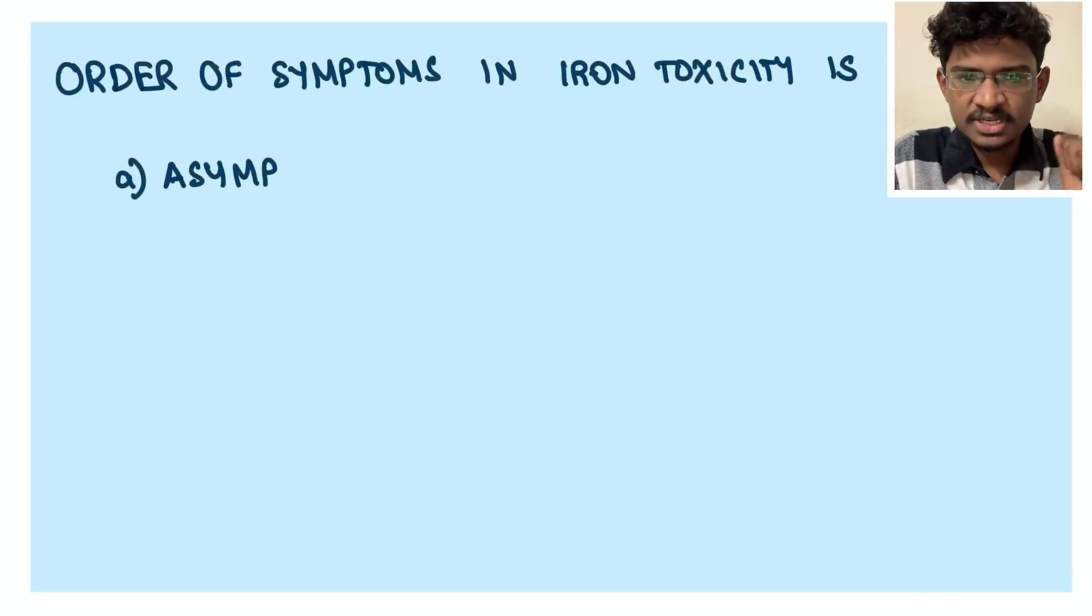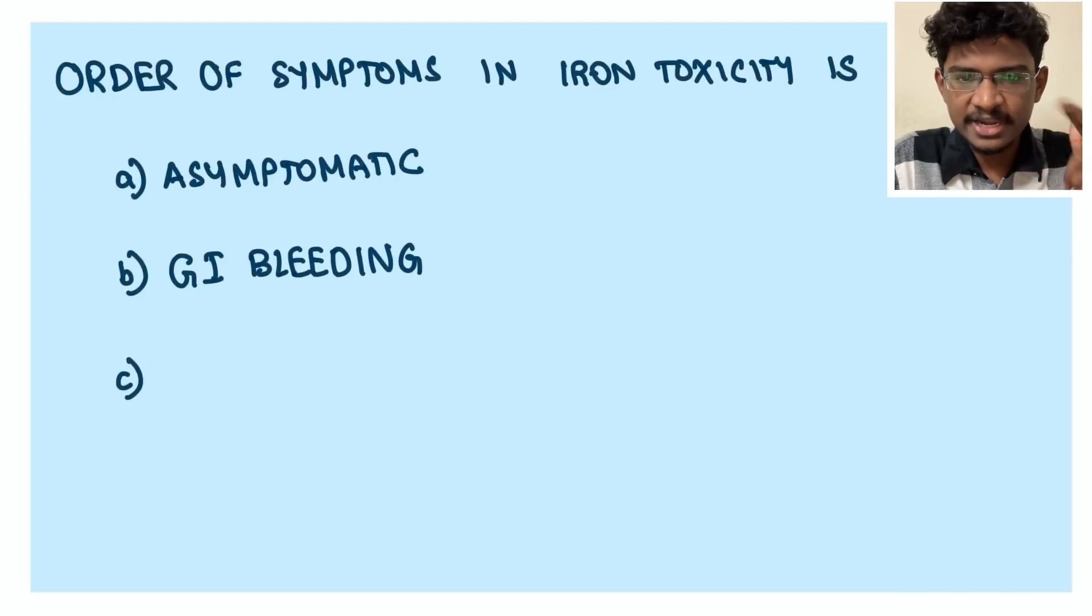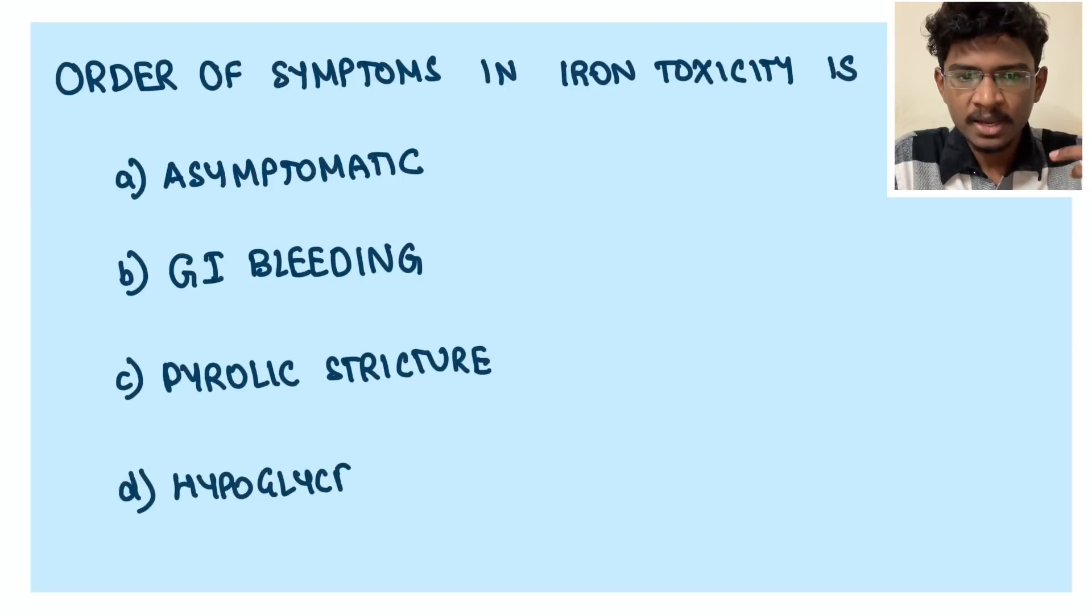First question: the order of symptoms appearance in case of iron toxicity. The options are asymptomatic, GI bleeding, GI strictures, and fulminant hepatic failure.